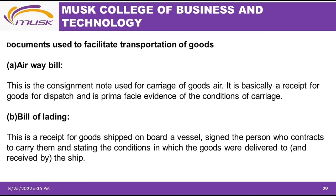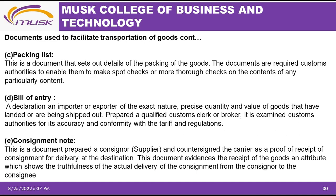We also look at documents used to facilitate transportation. The airway bill is a consignment note used for the carriage of goods transported by plane. The bill of lading is a receipt for goods shipped on board a vessel, signed by the person contracted to carry them, stating the conditions under which the goods are delivered. The packing list sets out the details of the packing of goods and is required by customs authorities to enable them to make spot checks.